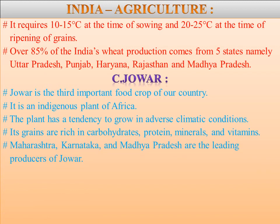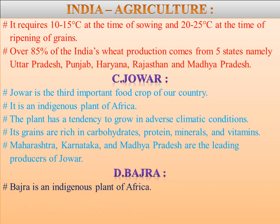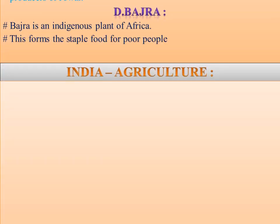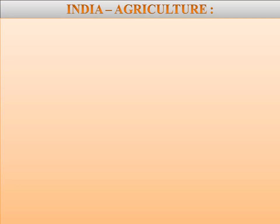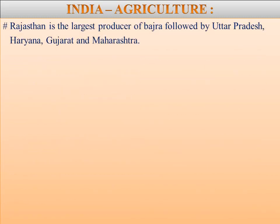Next we are going to learn about Bajra. Bajra is an indigenous plant of Africa. This forms a staple food for the poor people. Its stalks are used as food for cattle and for thatching purposes. Bajra is a crop of dry regions. Rajasthan is the largest producer of Bajra, followed by Uttar Pradesh, Haryana, Gujarat, and Maharashtra.